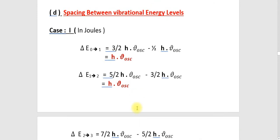If you compare it to rotational spectroscopy, it will be easy for you. Next, spacing between the vibrational energy levels. For E equal to 0 and E equal to 1, this is the spacing between the vibrational levels, which can be represented in joules. Delta E from 0 to 1 equals 3/2 h nu_oscillation minus half h nu_oscillation, giving h nu_oscillation.